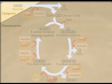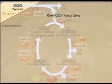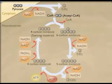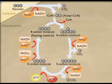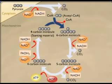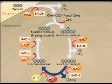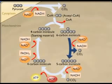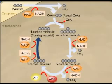Each glucose molecule is broken down into two pyruvate molecules during glycolysis. Then, each pyruvate is converted to acetyl CoA, which enters the Krebs cycle. Thus, for each glucose molecule, the Krebs cycle must complete two circuits to completely break down the two pyruvate molecules.